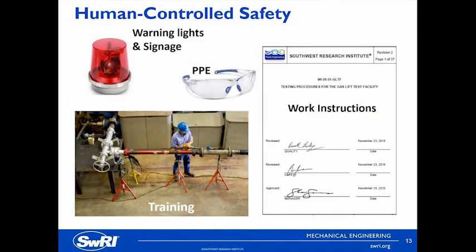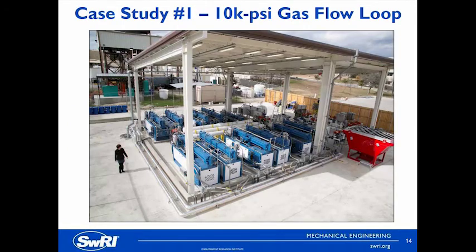The last layer in the layered approach is human controlled safety, and I put this last because it really should be your last line of defense. This includes warning lights and signage, PPE while you're in the operating facility, and proper training according to a published and revision-controlled work instruction, which is also very important.